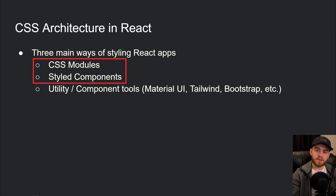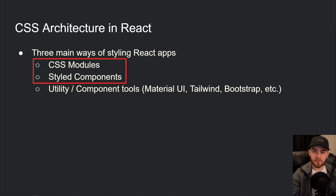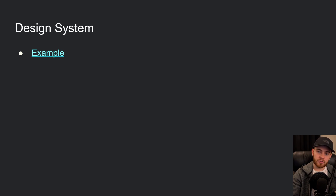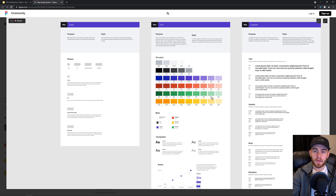CSS modules and styled-components are the most commonly used tools when it comes to highly customized software. The other tools often have their own documentation on how to approach them in a React application. Let's take a step back from the actual styling part — it all starts with proper design, and most of the time you as a developer are not in charge of the design; UI/UX experts are.